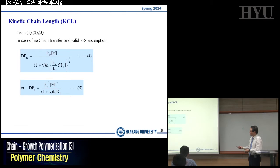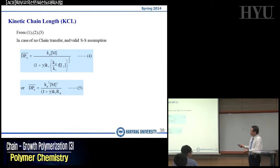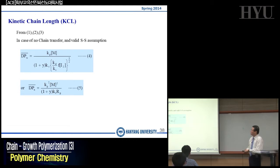We can rewrite equation number 5 from equations 4 and 5. When you increase the monomer concentration, you increase the degree of polymerization, whereas if you increase the initiator concentration, you decrease the degree of polymerization. Equations 4 and 5 will be quite useful in some cases, assuming that you do not have any chain transfer reactions.